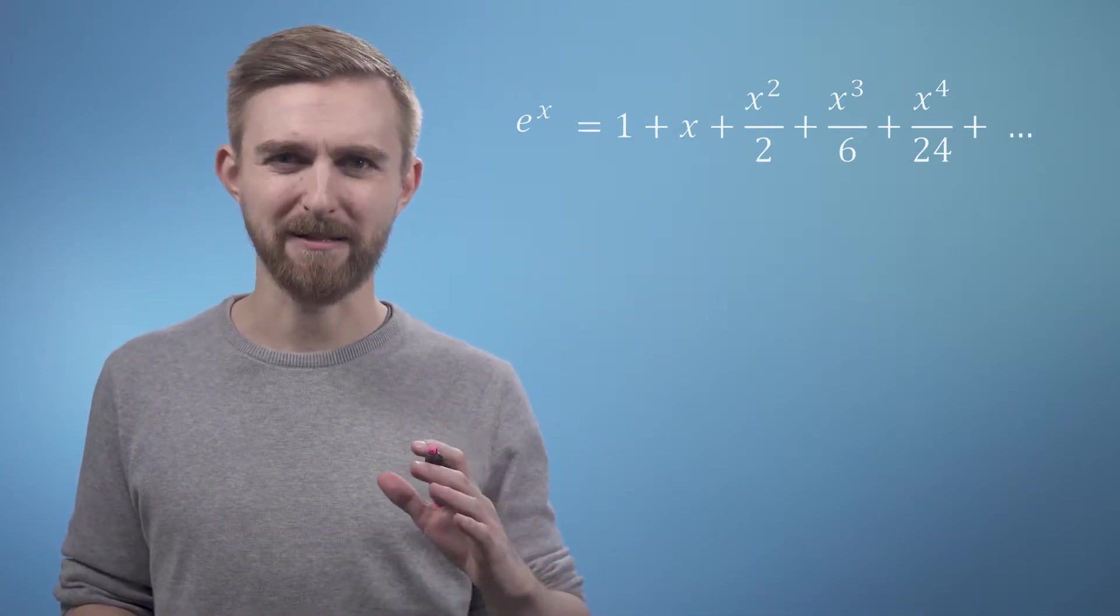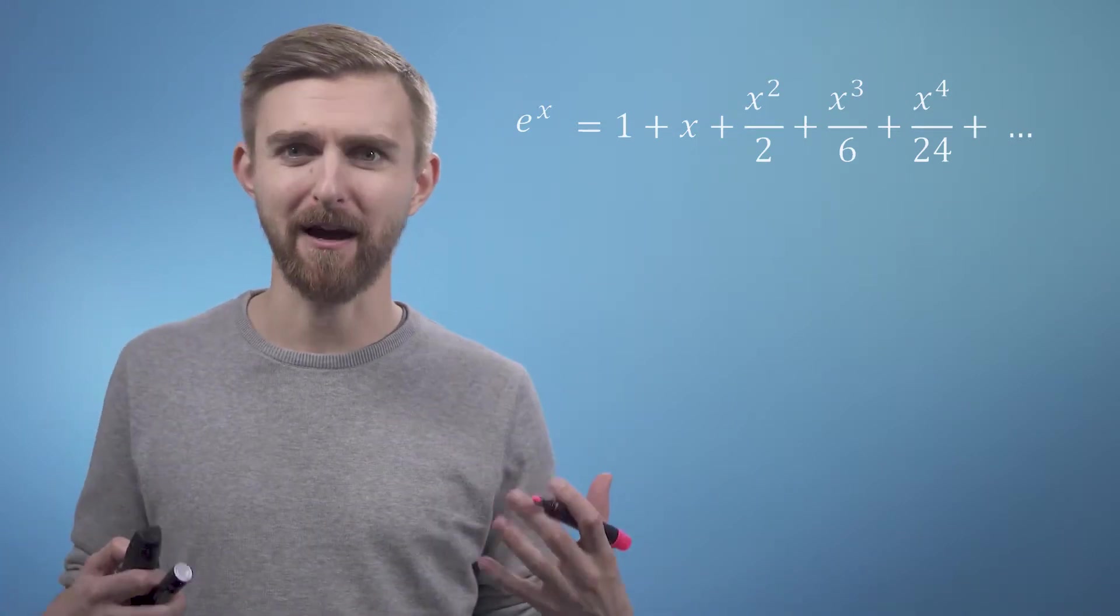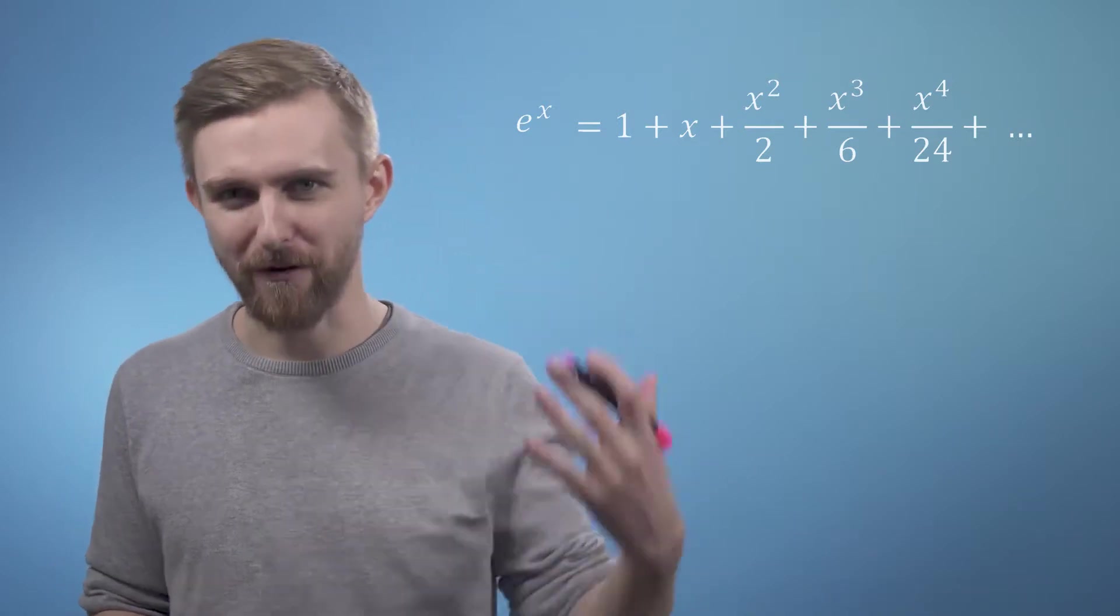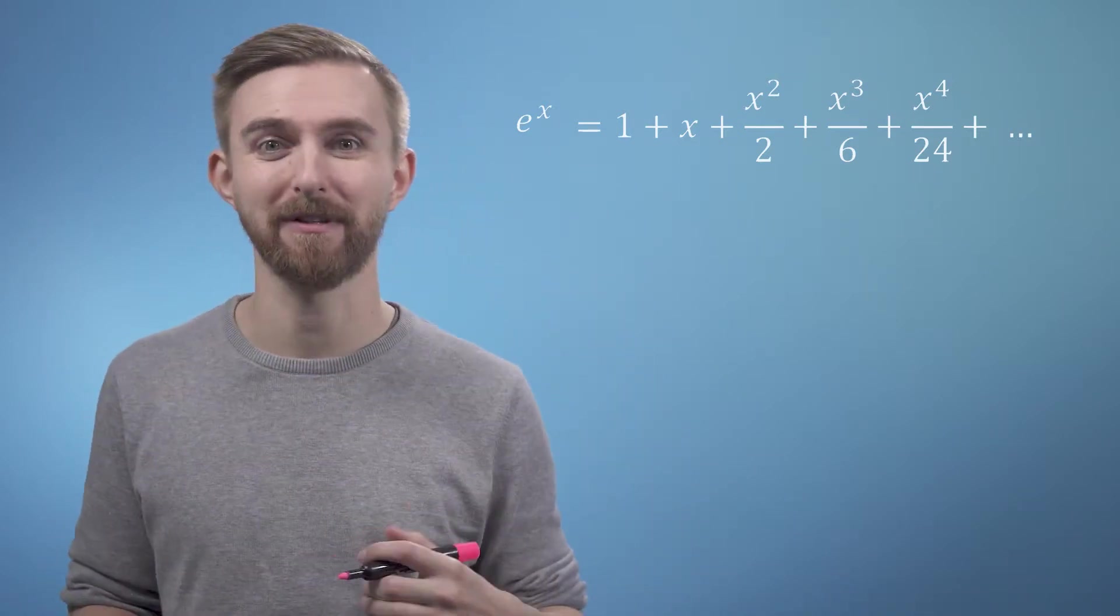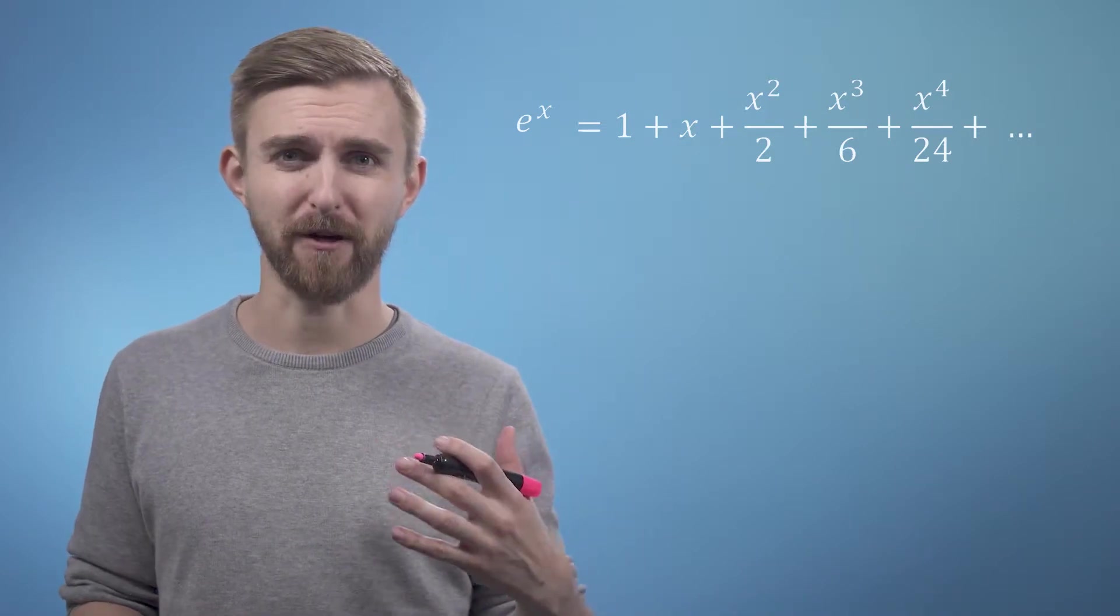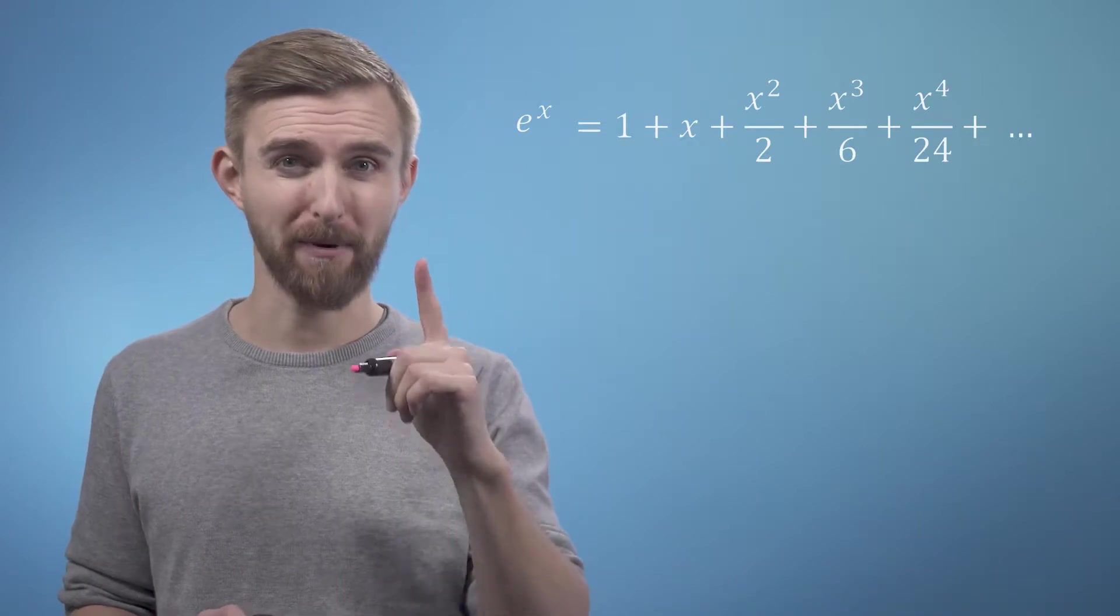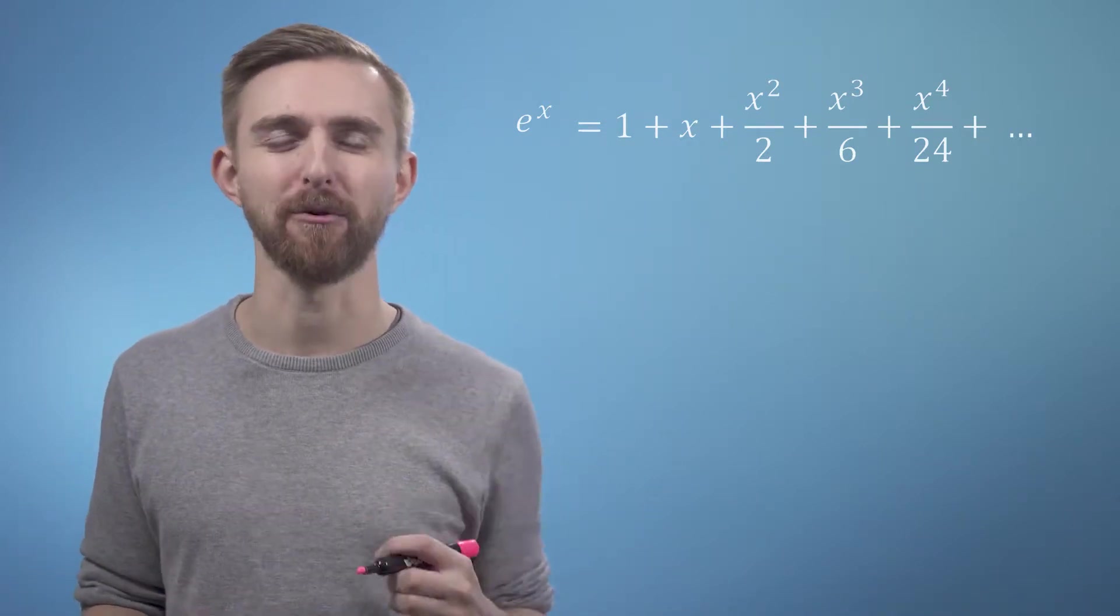What the Taylor series method tells us is that if we know everything about the function at some point, where by everything I mean the function's value, its first derivative, second derivative, third derivative, etc., then we can use this information to reconstruct the function everywhere else. So if I know everything about it at one place, I also know everything about it everywhere.